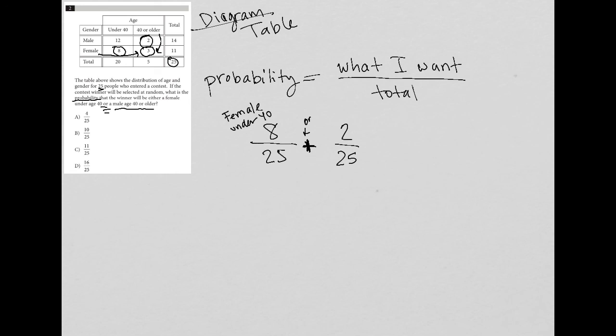So what I have left is eight over 25 plus two over 25, which equals 10 over 25 since our denominators are the same. And I notice that all of my answer choices have 25 as a denominator, so there's no need to simplify or reduce that fraction. And my answer is choice B.